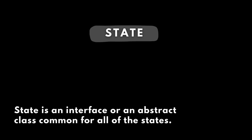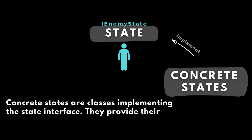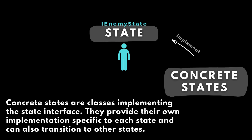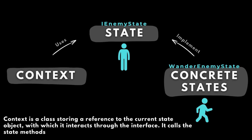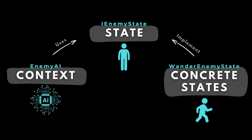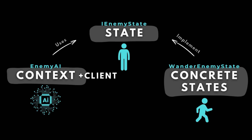To understand the pattern, we should look at the diagram. The first element is a state, which is an interface or abstract class common for all states — in our case, that could be EnemyState. Then we have the concrete states, which are classes implementing the state interface; they provide their own implementation specific to each state and can also transition to other states, so we'll have WanderState, FollowState, AttackState, and so on. The third piece, the manager of these states, is a context — a class storing a reference to the current state object and interacting with it through the interface. The last piece, which some people use and some don't, is the client, which communicates with the context but doesn't interact with state objects directly. In my case, I'll combine the client and context into one piece.